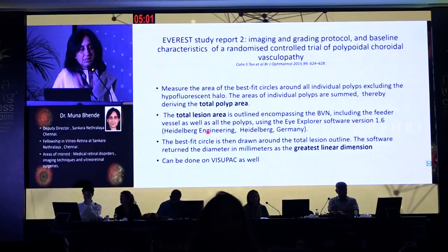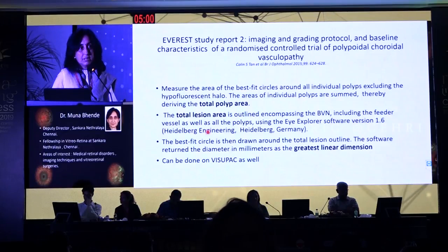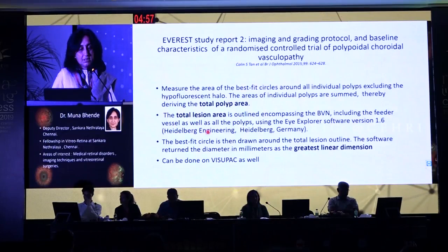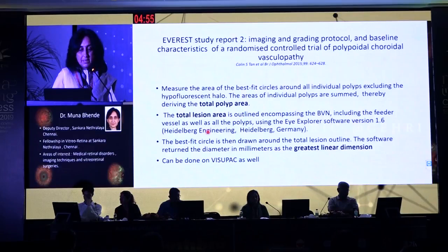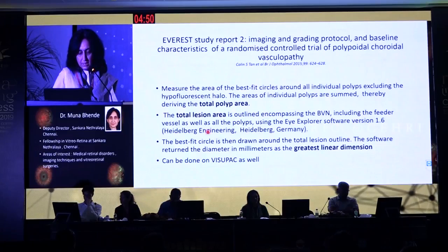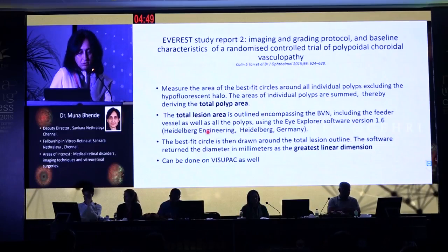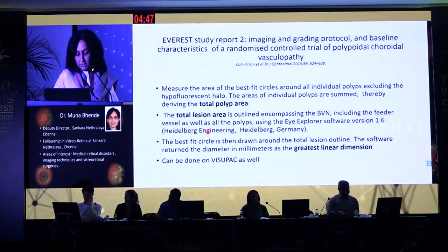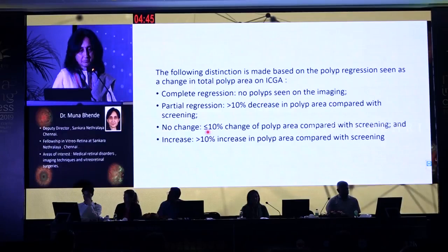Whereas the total lesion area, which we best know as the greater lesion diameter, is outlined encompassing the branching vascular network, the feeder vessels as well as the polyps. This can be done not only on the Heidelberg, it can be done very well on a VisuPak as well.